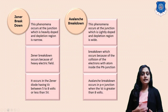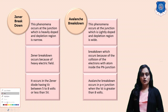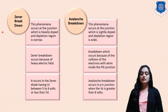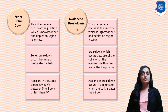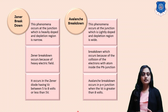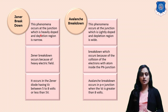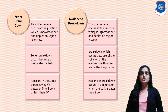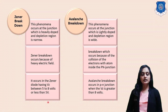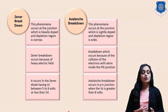In a Zener diode, there can occur two breakdown phenomena: Zener breakdown and avalanche breakdown. Zener breakdown occurs at a junction which is heavily doped and the depletion region is narrow, caused by a high electric field. Avalanche breakdown occurs at a junction which is lightly doped and the depletion region is wide, due to the collision of electrons with atoms inside the PN junction.